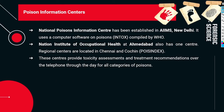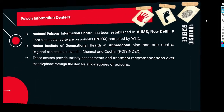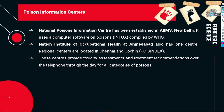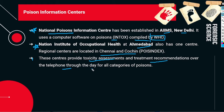The National Poison Information Center, established in AIIMS New Delhi, uses computer software on poison known as 'INTOX,' compiled by the World Health Organization. The National Institute of Occupational Health at Ahmedabad also has one center, and regional centers are located in Chennai and Kochi. These centers provide toxicity assessment and treatment recommendations over the telephone throughout the day for all categories of poison.